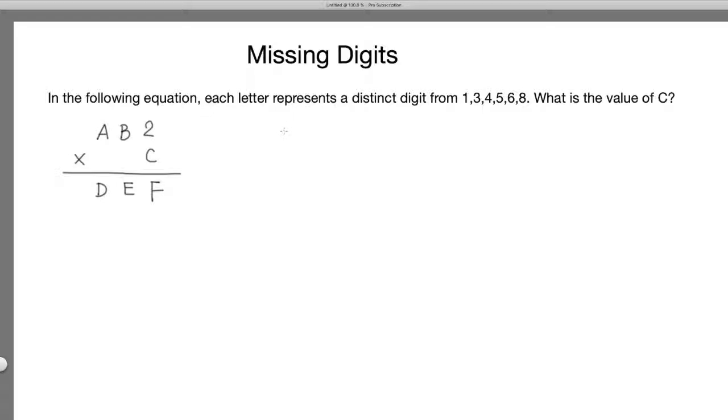For this question, where is the key observation? Give you some minutes to think about. The key is actually really on the C. What can C be? And using the fact that all these letters are different. Can C be 1? Let's just look at all the possible cases for C: 1, 3, 4, 5, 6, 8. Question number one: can C be 1? If C is 1, 2 times 1, F has to be 2. So C cannot be 1.